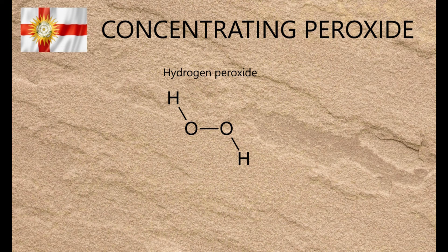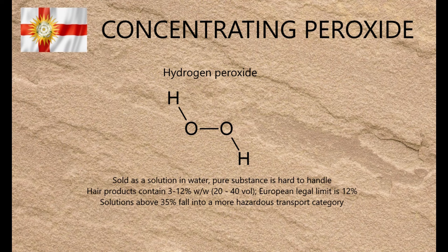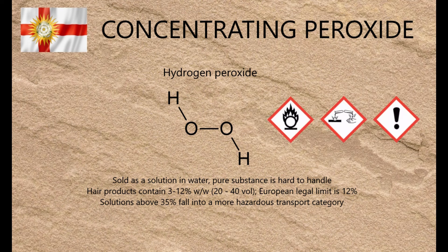Hydrogen peroxide is an incredibly useful reagent with a huge number of applications in both organic and inorganic chemistry. In many parts of the world the highest concentration that can be bought by amateurs is 12% by weight or less, while a lot of chemistry requires 30% or more, which is not only restricted to companies or universities but above 35% is also difficult to transport without paying through the nose for specialist couriers.